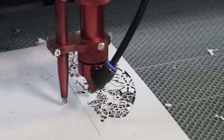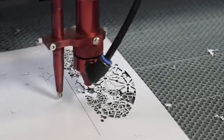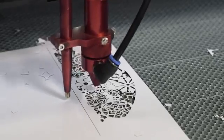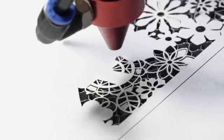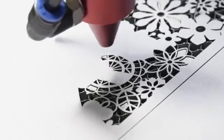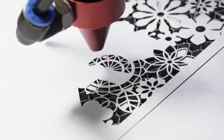Since paper is so easy to cut, you essentially want to be running your machine at the fastest speed that is still stable and the lowest power possible. For this job I am cutting at 35 millimeters per second at 15% power.